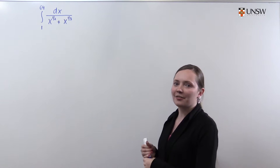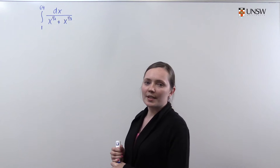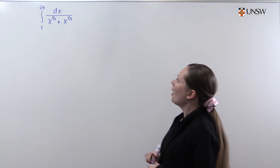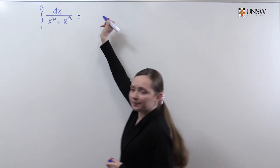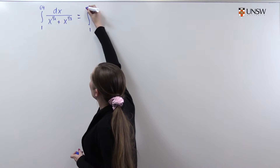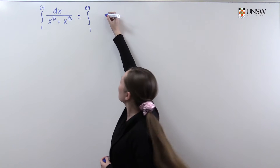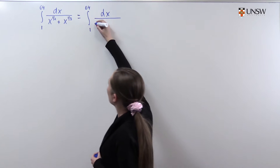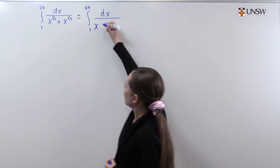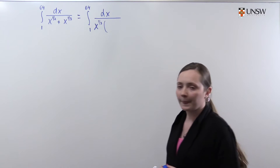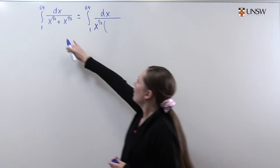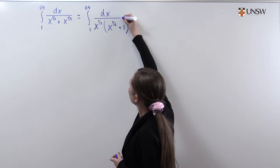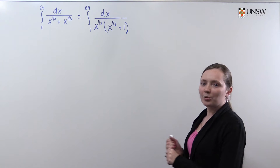Now we will solve the definite integral from 1 to 64 of dx over x to the 1/2 plus x to the 1/3. First we rearrange it to see what the best substitution should be. In the denominator we factor out x to the power 1/3, and in the brackets we will have x to the power 1/6 plus 1.